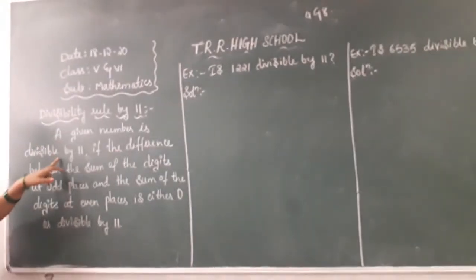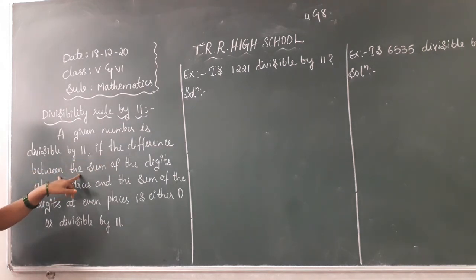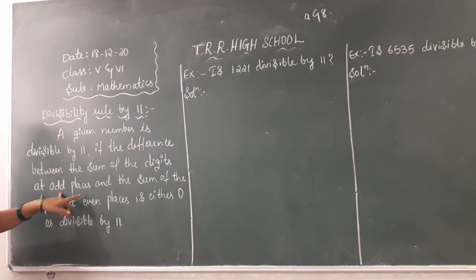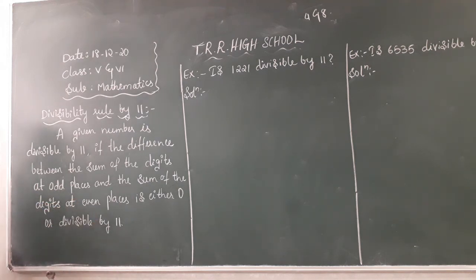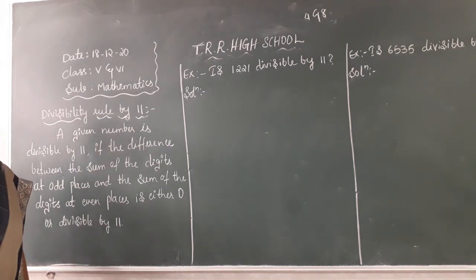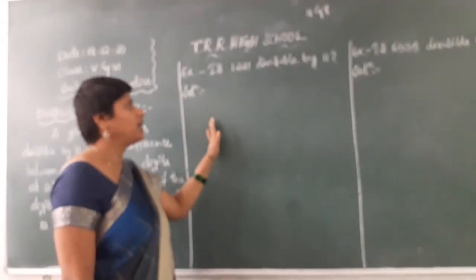A given number is divisible by 11 if the difference between the sum of the digits at odd places and the sum of the digits at even places is either 0 or divisible by 11. If I just read the definition like this you won't understand, so we will go with an example.